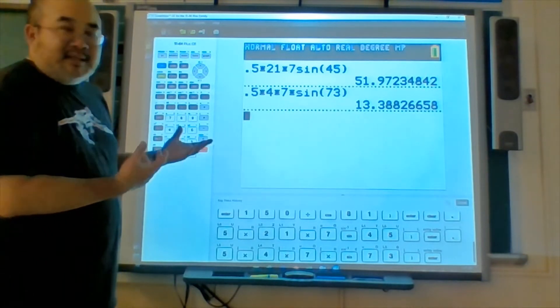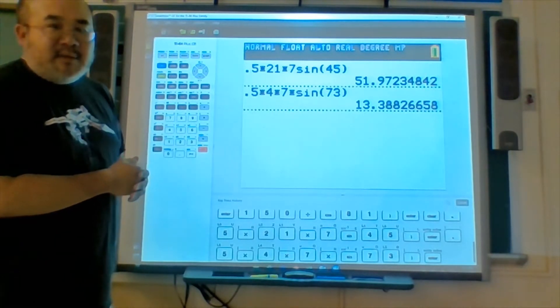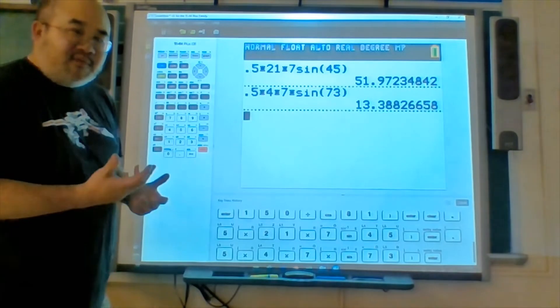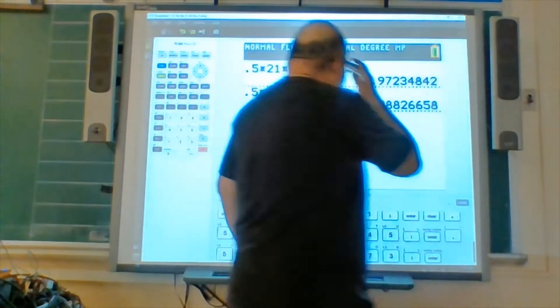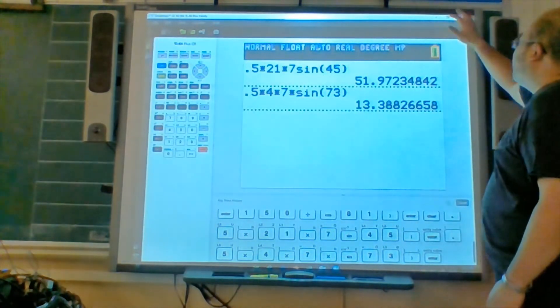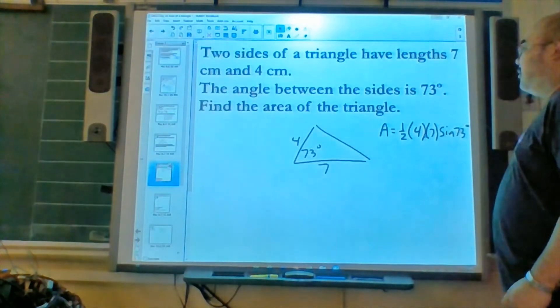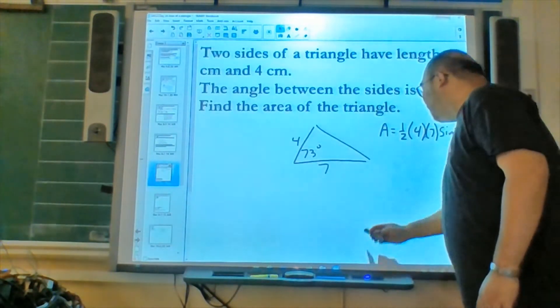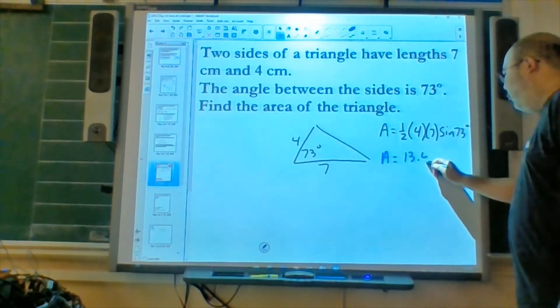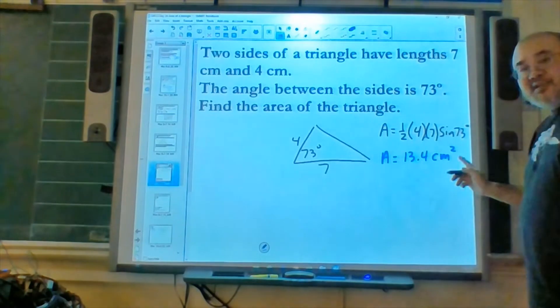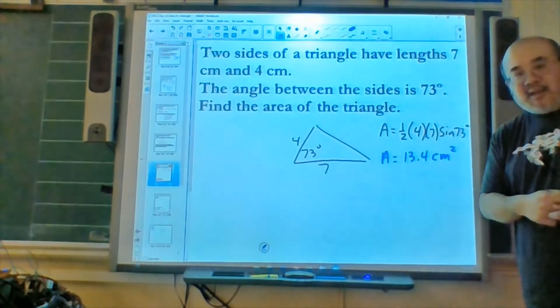We'll round to nearest tenth in this case. There'll be times when we're asked to round to nearest whole number, nearest foot, nearest centimeter. So 13.3882, or 13.4 centimeters. Our area's going to be 13.4 centimeters squared. Please do not forget to put the square on the units.